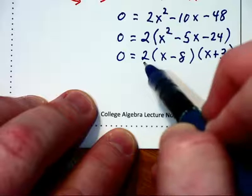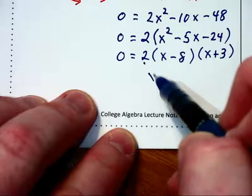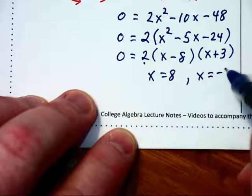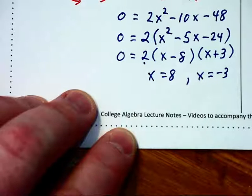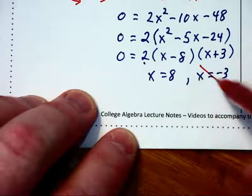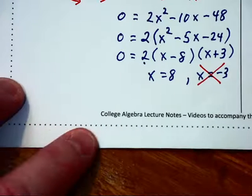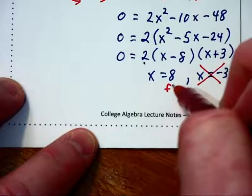The 2 out front cannot equal 0, so we find x equals 8 or x equals negative 3. Since we need a positive length, we will use only x equals 8 feet.